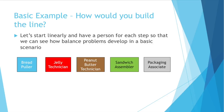That's simple enough. But how would you build a production line to do this? Let's be linear about it — a station and person for each of the five steps. We'll have a bread puller station, a jelly technician, a peanut butter technician, a sandwich assembler, and a packaging associate. We have our basic production line.